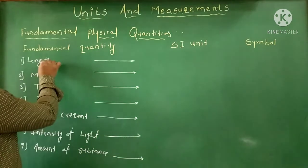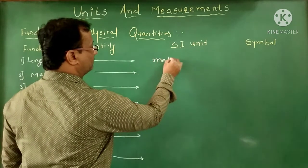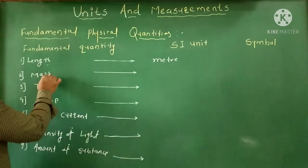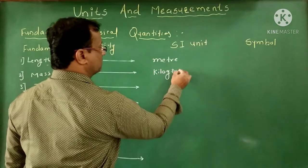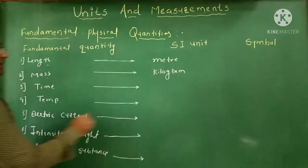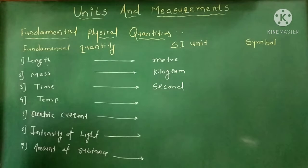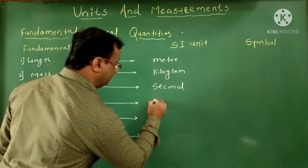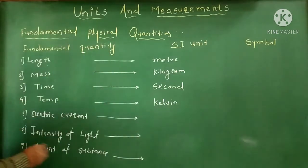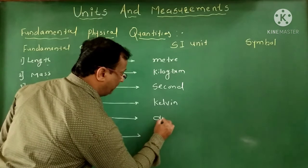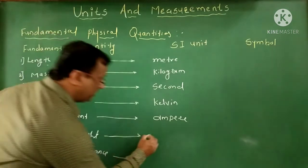The SI unit of length is meter. The SI unit of mass is kilogram. Time is measured in second. Temperature is measured in kelvin — kelvin is the name of a scientist. Electric current is measured in ampere. Intensity of light is measured in candela.